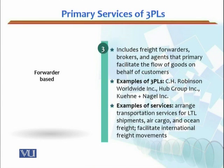The third one is forwarder-based. Forwarder-based mein aap ke paas it includes freight forwarders, brokers, and agents that primarily facilitate the flow of goods on behalf of the customer. Commission agents bhi work kar sakte hain, brokers bhi work kar sakte hain, aur freight forwarders bhi hain — in ki functionality thodi si different hai. Examples of such 3PLs would be CH Robinson Worldwide, Hub Group, and Kuehne+Nagel — jo ke Pakistan mein bhi work karte hain.